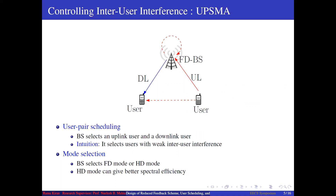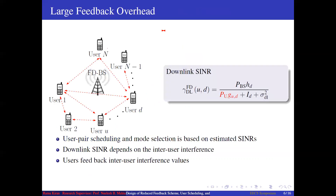In such scenarios, the base station switches to half duplex mode depending on feasibility, which is called mode selection. User pair scheduling and mode selection happen at the base station based on estimated uplink and downlink SINRs.